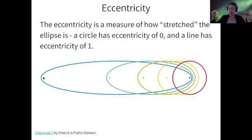So if you stretch an ellipse all the way out, you end up with a line. And a line has an eccentricity of one. So all the eccentricities lie between zero and one somewhere.